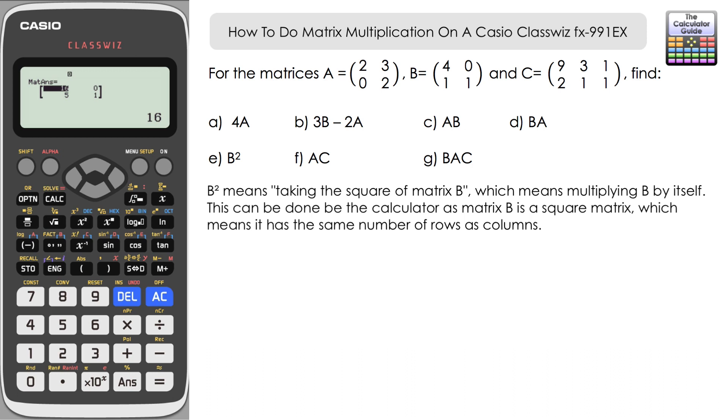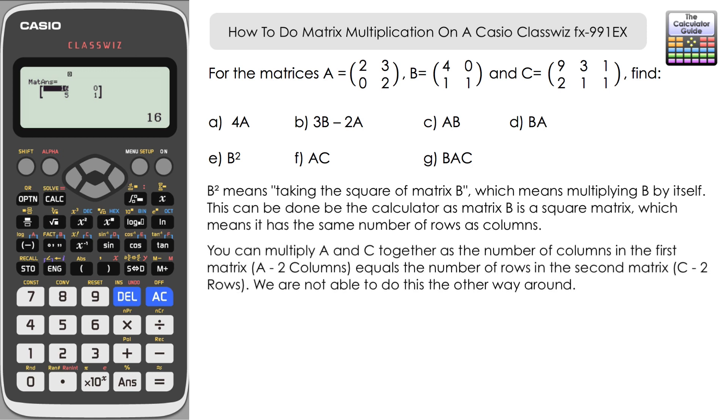Now F, AC. Now we can multiply these together even though they're of different dimensions because the number of rows in matrix C, two rows, matches the number of columns that we have in matrix A, which is also 2. So if that's satisfied, we can multiply them together.